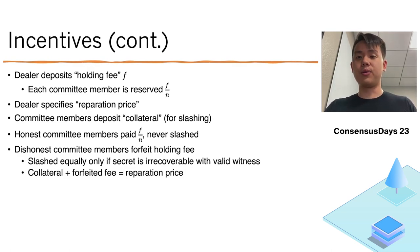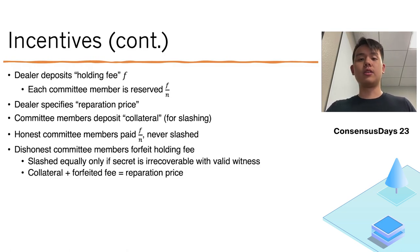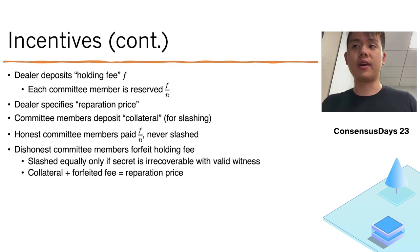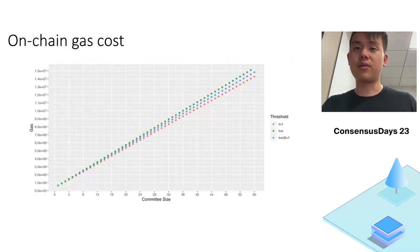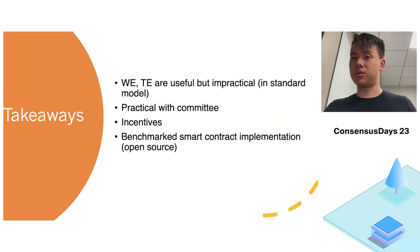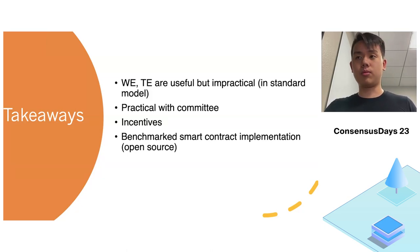More details about the incentive mechanics are in the paper. One additional note is that with this incentivized scheme, the dealer must also specify a deadline to submit the witness, because there is an increasing opportunity cost as the duration of the secret increases. In terms of benchmarks for on-chain gas costs, it's appropriate for committee sizes up to around 50, where we hit the ETH block gas limit. The key takeaways are: witness encryption and timelock encryption are useful but impractical in the standard model, but can be made practical with a committee. We use incentives to promote honest participation, and we have an open-source smart contract implementation.